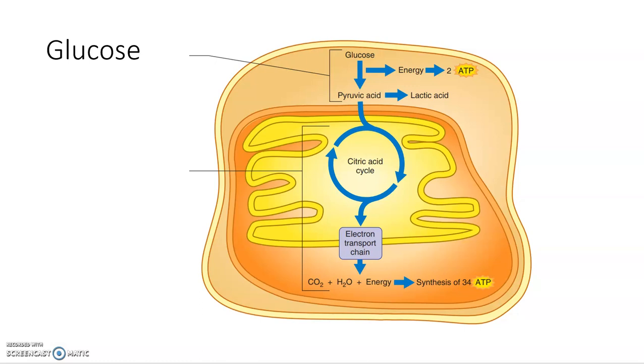Glucose is then the next step of molecules to be considered whenever making energy for muscles. Glucose can be made into ATP either through anaerobic processes or aerobic processes, depending on the availability of oxygen.